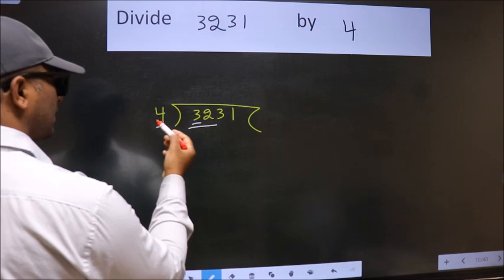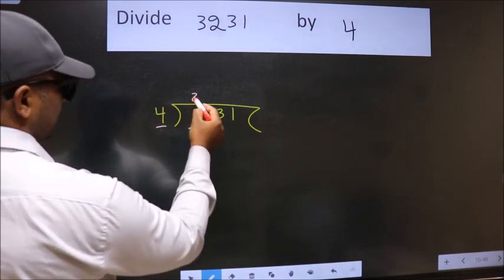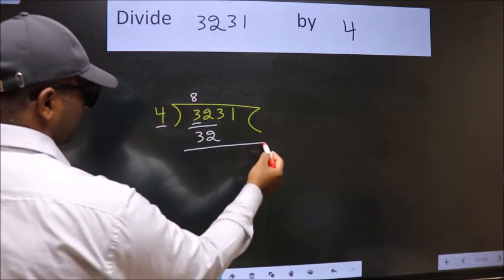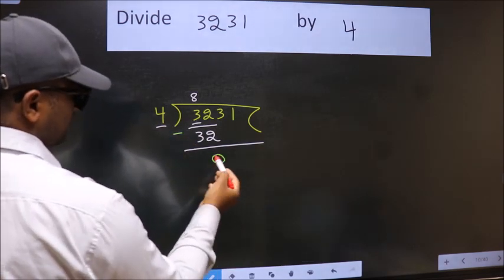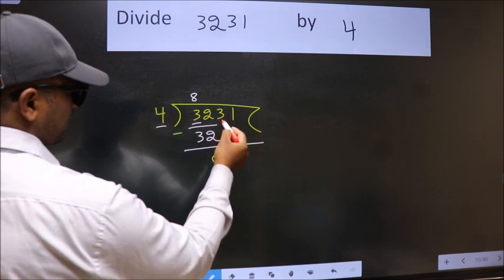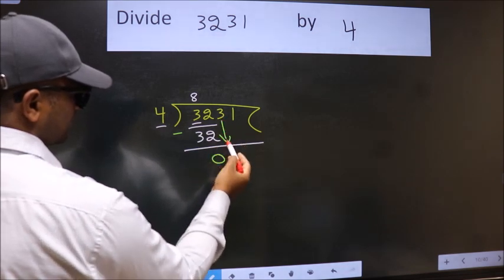When do we get 32 in the 4 table? 4 times 8 is 32. Now we should subtract. We get 0. After this, bring down the next number. So, 3 down.